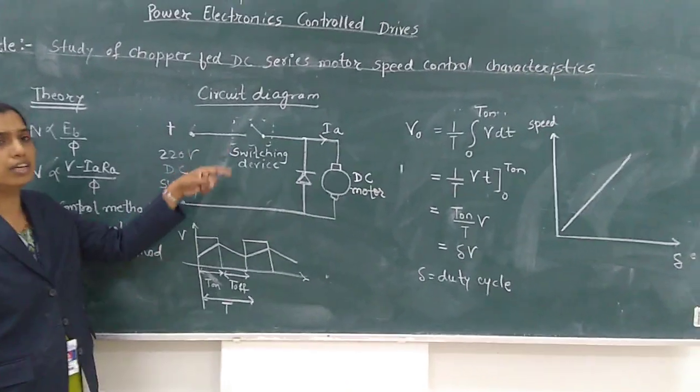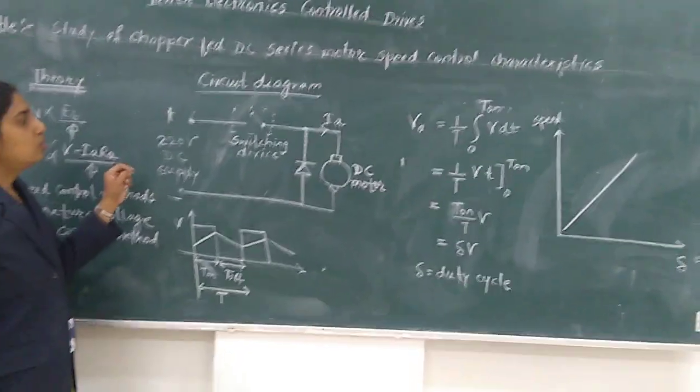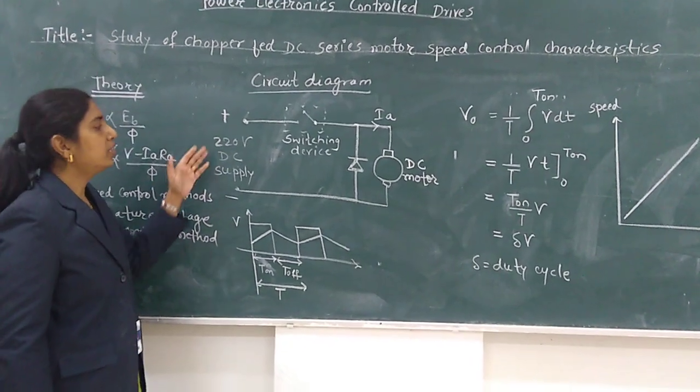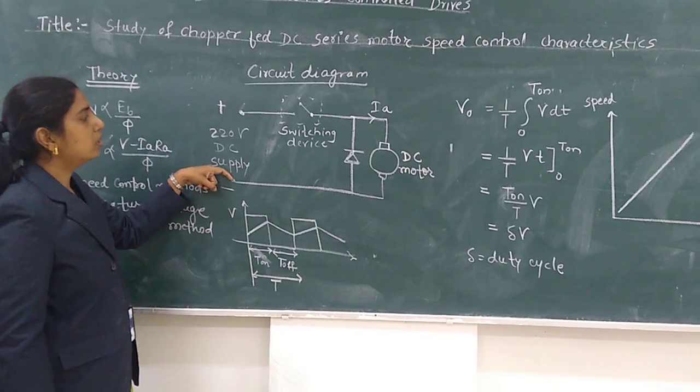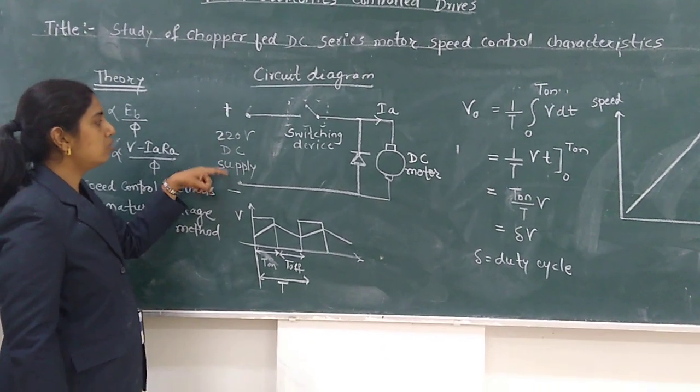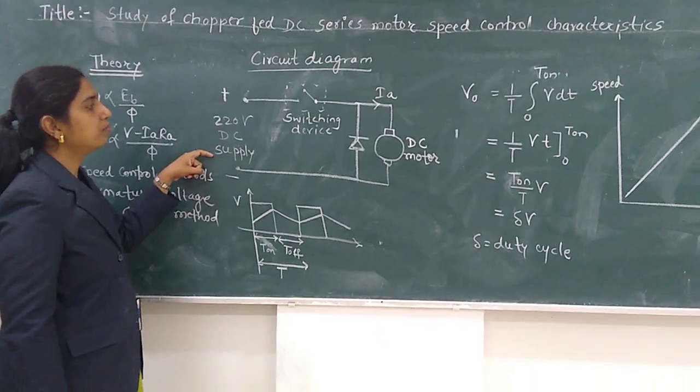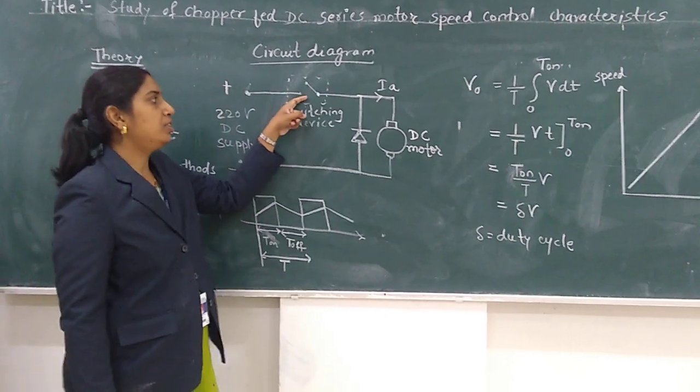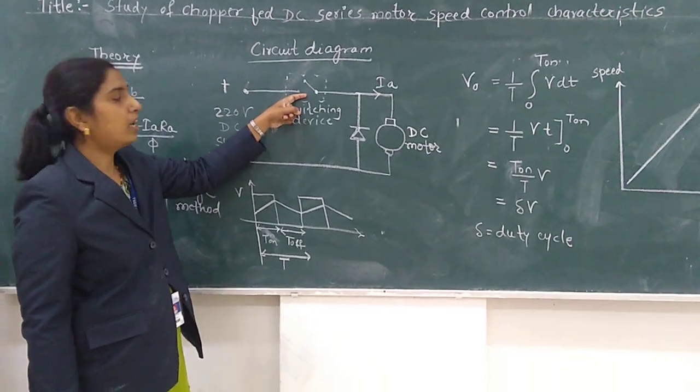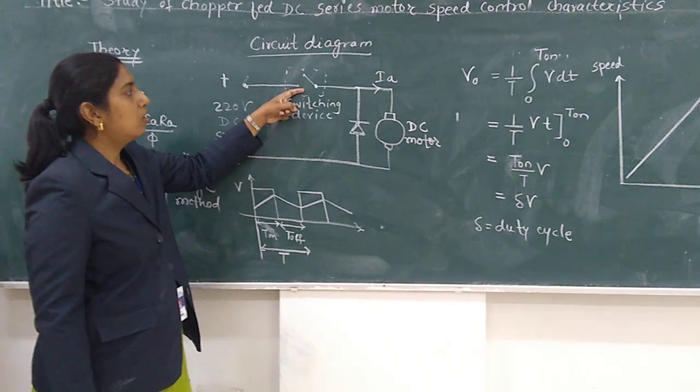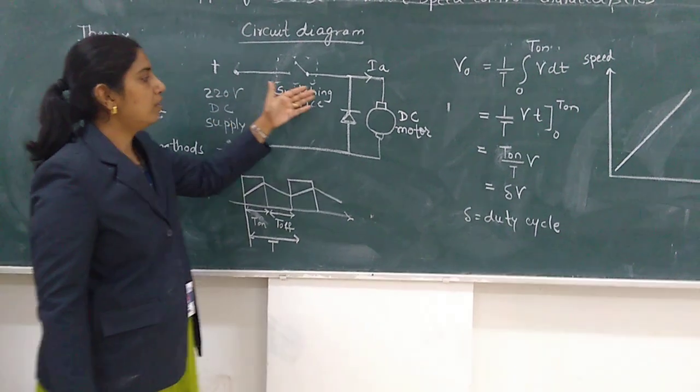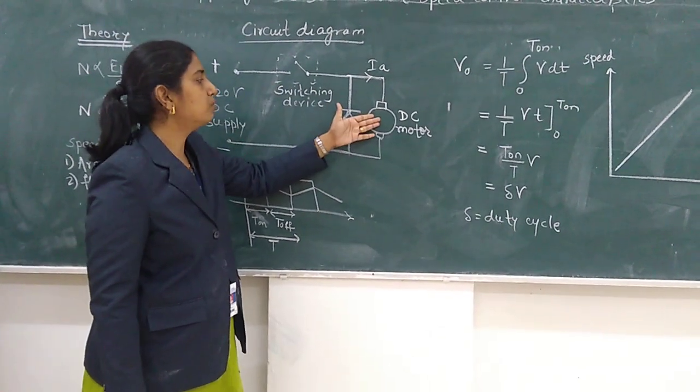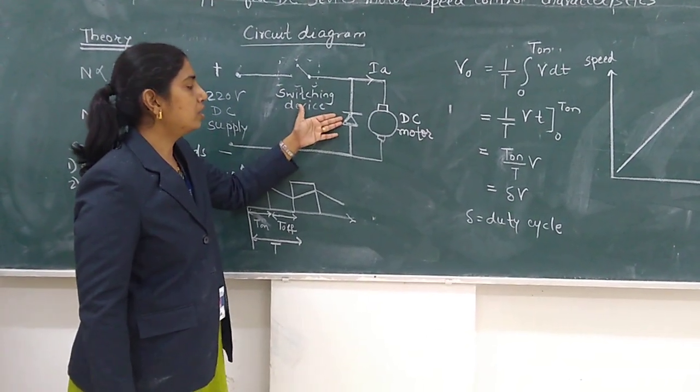So this is the circuit diagram of the chopper. Chopper gives a variable DC voltage, not fixed DC voltage. The input supply of the circuit is fixed DC voltage. Here there is a switching device which may be MOSFET, IGBT, or any switching device. After this we have connected our DC series motor and this is the freewheeling diode.